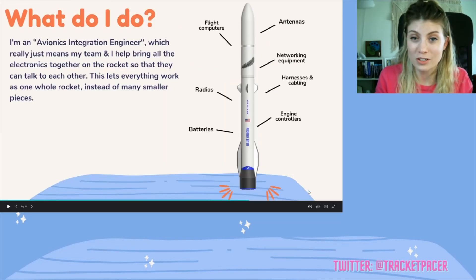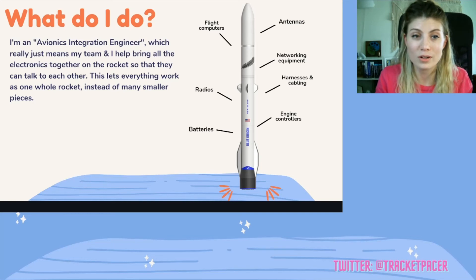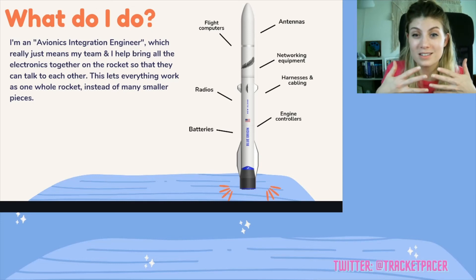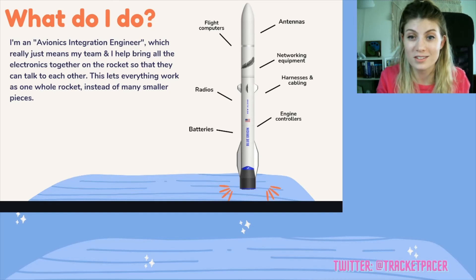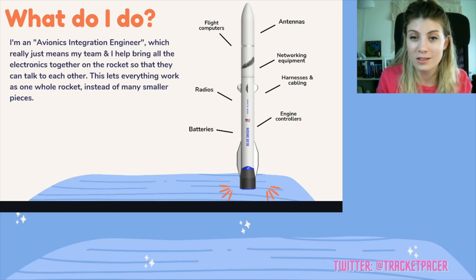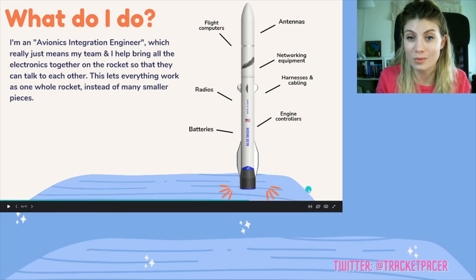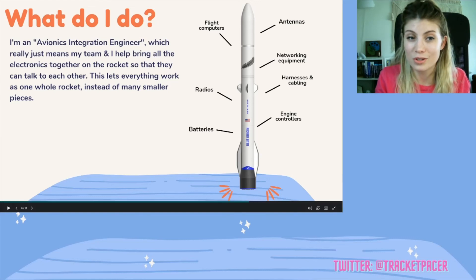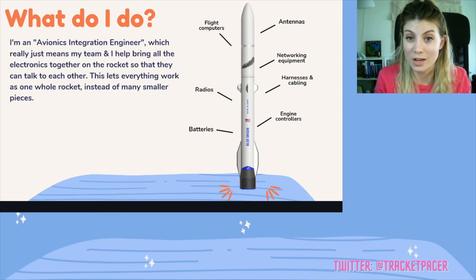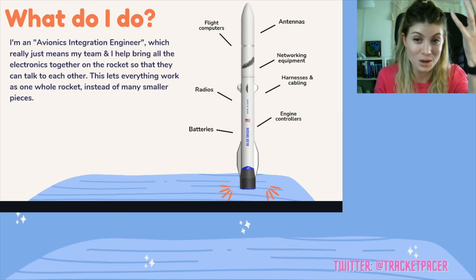I'm an avionics integration engineer, so I work on a rocket called New Glenn at Blue Origin. I really am a network engineer, but I work on what we call avionics boxes — a combination of aviation and electronics. The word integration means bringing things together, so I bring together the avionics equipment on the rocket from a networking standpoint, which means I help all of the data on the rocket get where it needs to go and make sure each box is talking to the others it needs to. This way, all of the boxes function not independently but together, creating what we're calling a rocket and getting it to fulfill its purpose — to go up into space, do its mission, and come back down safely.